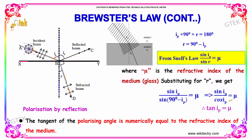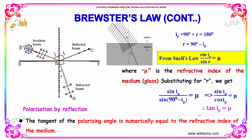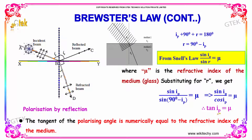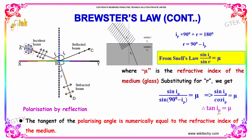Since sin divided by cos is tan, we get tan(ip) = mu. Therefore, the tangent of the polarizing angle is numerically equal to the refractive index of the medium.